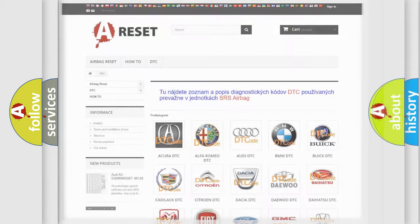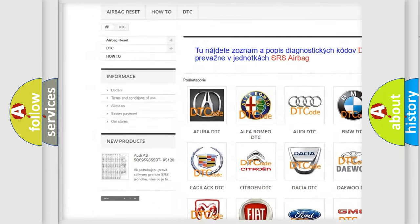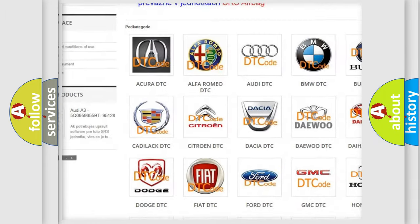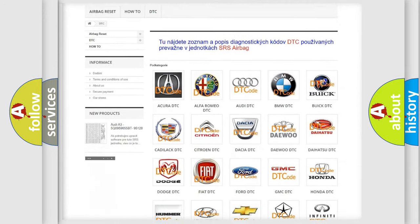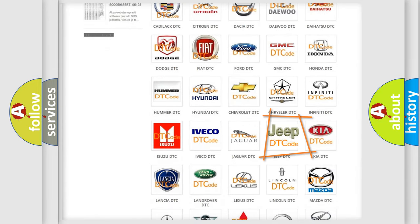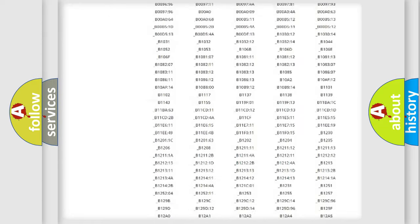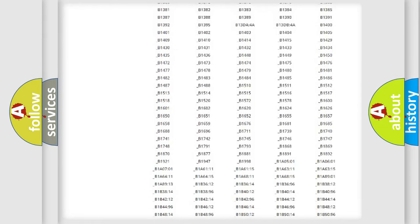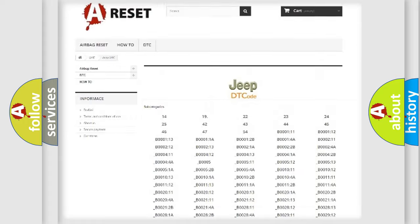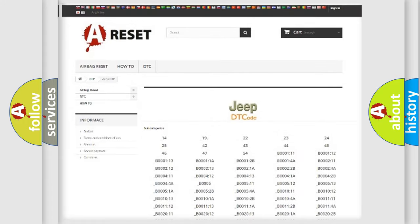Our website airbagreset.sk produces useful videos for you. You do not have to go through the OBD2 protocol anymore to know how to troubleshoot any car breakdown. You will find all the diagnostic codes that can be diagnosed in Jeep vehicles, also many other useful things.